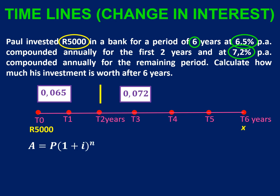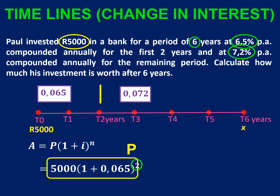So we've got five thousand Rand and it's going to earn interest at 0.065 for two years. Now at this point, if I push equals I will get an answer, and that answer is the P-value I'd use to start my next calculation. But instead of pushing equals, I'm just going to write down the next item in my formula — what comes after P is an interest bracket.